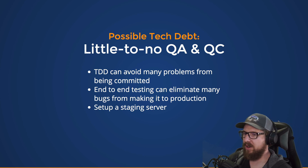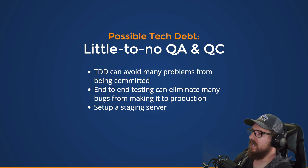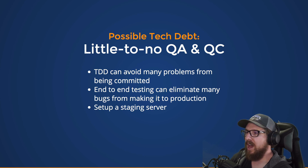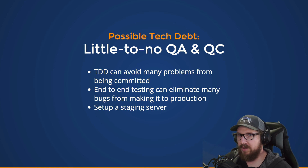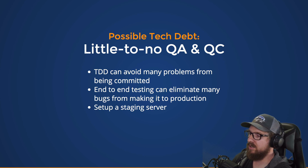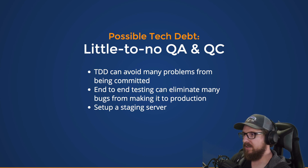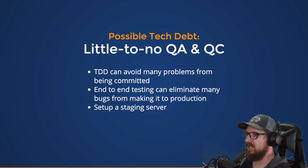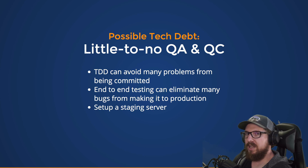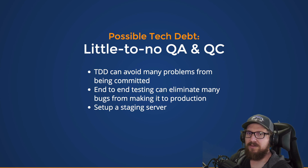Lastly, set up a staging server. Having a place where you can deploy your code on a separate server to make sure everything looks good and is the way you expect it to be will mean fewer reverts, fewer backup restores, and all sorts of things like that. As much as it's a stretch to call this strictly tech debt, it still falls under that same vein of saving yourself from yourself long-term.